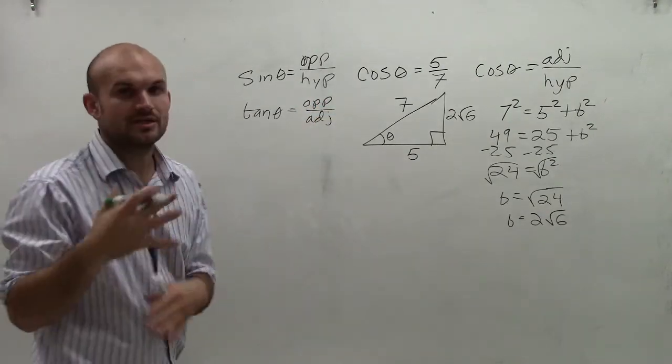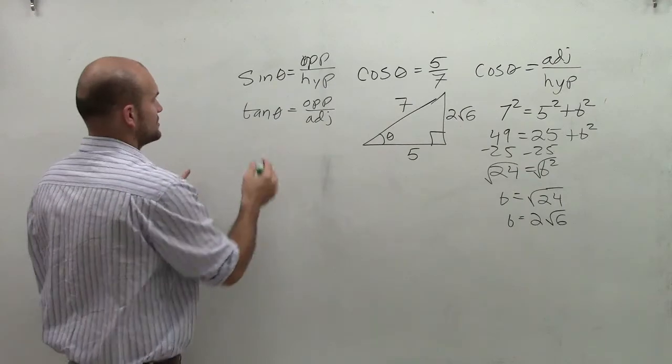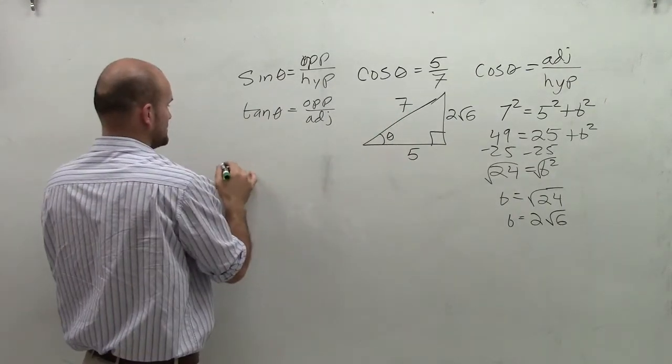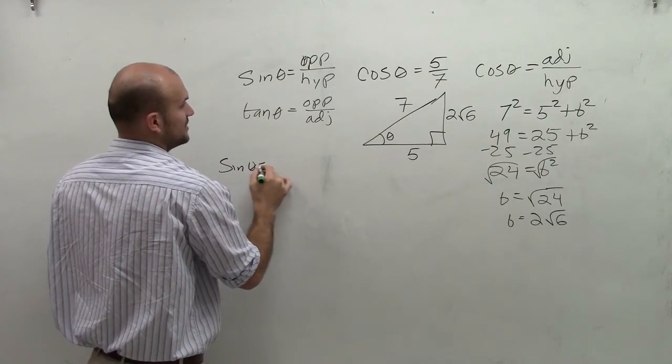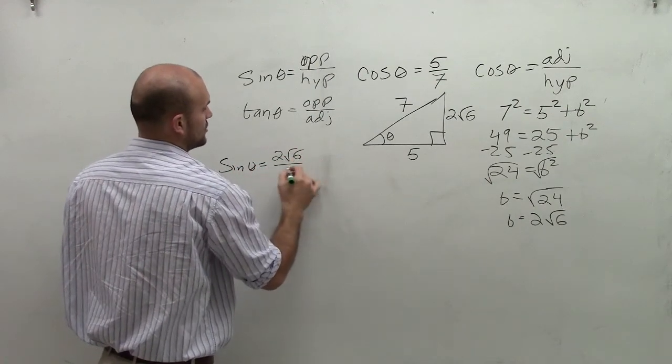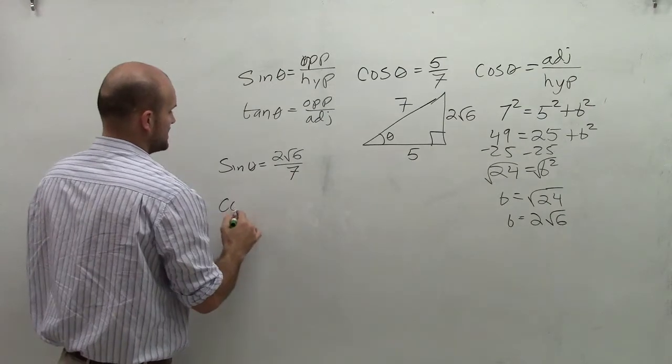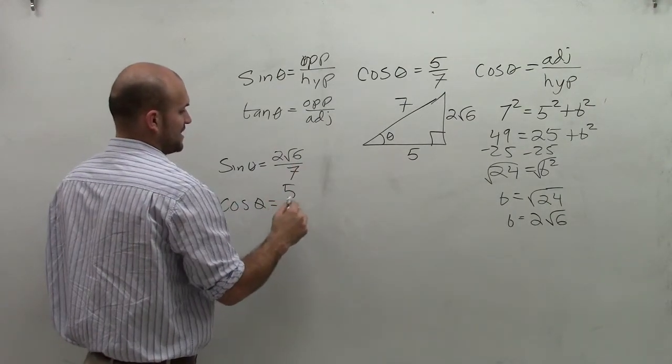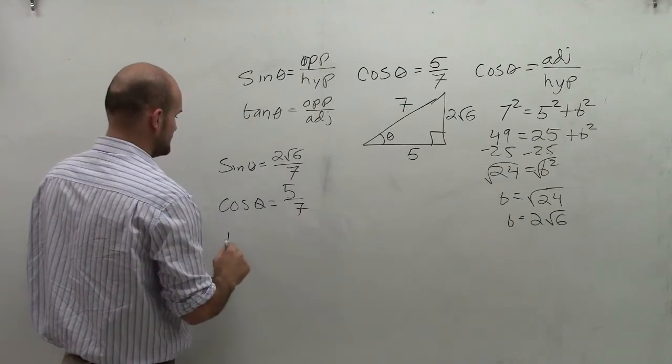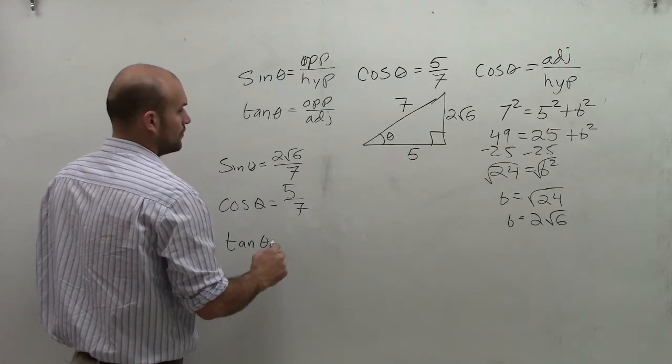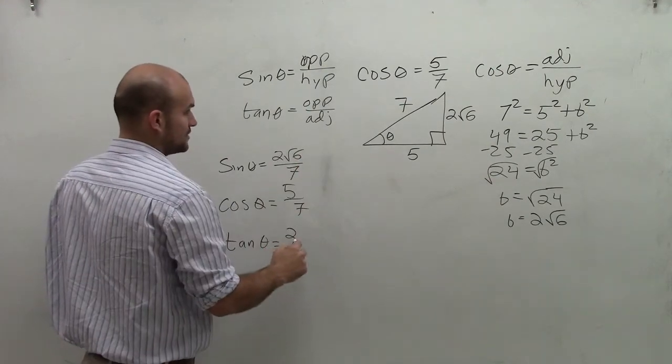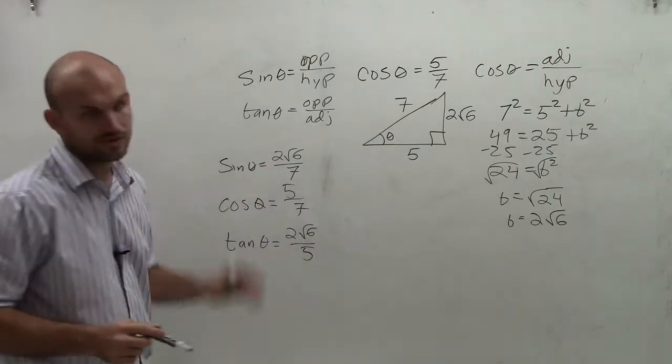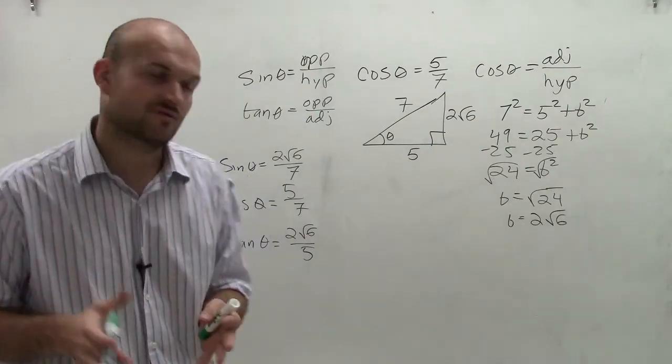So let's go and find these out first. So my sine, opposite, which is opposite of my angle, which is 2 radical 6. So sine of theta equals 2 radical 6 over 7. Cosine, which we already figured out, is going to be 5 over 7. And then let's do tangent of theta, which is opposite over adjacent. 2 radical 6 over 5. So those are my three main trigonometric functions.